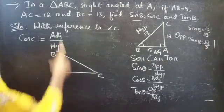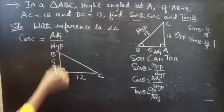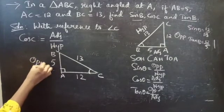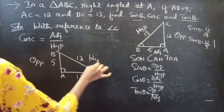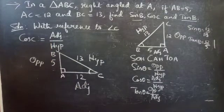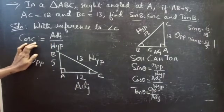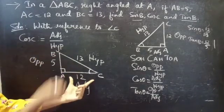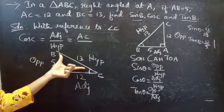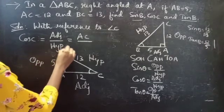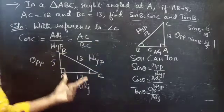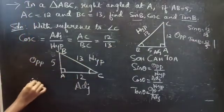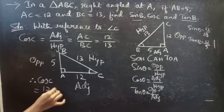After tilting the figure, we have AC equals 12, AB equals 5, and BC equals 13. With reference to angle C, AB is our opposite side, BC is our hypotenuse, and AC is our adjacent side. So cos C equals adjacent by hypotenuse, which is AC by BC, giving us 12 by 13.